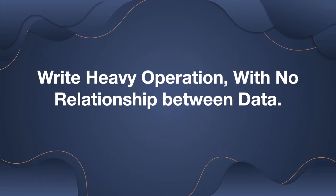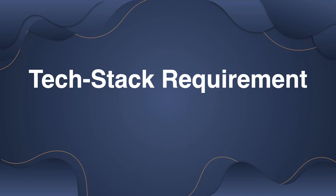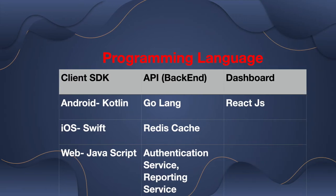From this analysis, we find it is a write-heavy operation because we have lots of write operations but minimal read operations. Also, every crash log record is independent — we can get all detail from a single record — so there is hardly any relationship between records. For the tech stack, on the client side we will build Android, iOS, and web SDKs separately: Kotlin for Android, Swift for iOS, and JavaScript for web. Hybrid environments like Flutter are also possible.